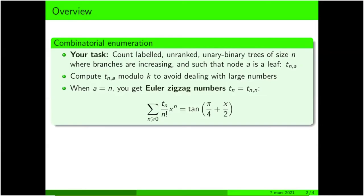It turns out that when a is equal to n, the numbers t_n we have are Euler zigzag numbers, so they are well-known because they do have a name, and they are the coefficients of the exponential generating function of tangent of pi over 4 plus x over 2.